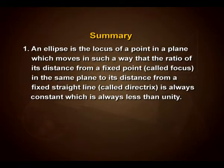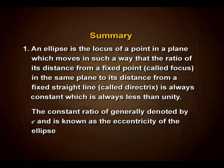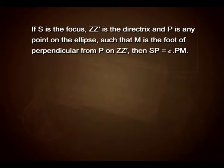Now students, let us summarize the concepts we have studied in this chapter. An ellipse is the locus of a point in a plane which moves such that the ratio of its distance from a fixed point called focus to its distance from a fixed straight line called directrix is always constant and always less than unity. This constant ratio is denoted by e and is known as the eccentricity. If S is the focus, ZZ' is the directrix and P is any point on the ellipse such that M is the foot of the perpendicular from P on ZZ', then SP equals e into PM.